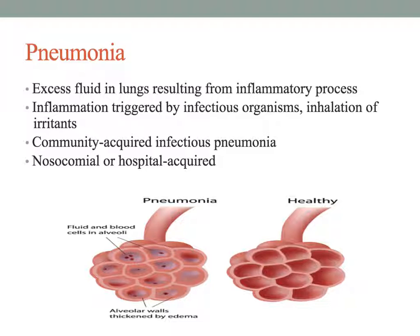People who are most likely to contract pneumonia are smokers, those with altered consciousness from alcohol, seizures, anesthesia, or drug overdose, those who are immunocompromised, chronically ill people who are malnourished or debilitated, and people on bed rest with prolonged immobility.